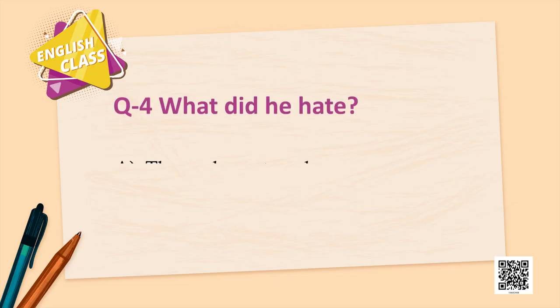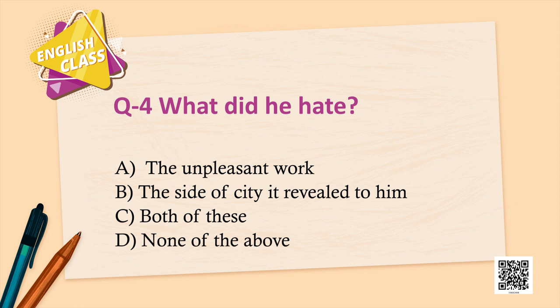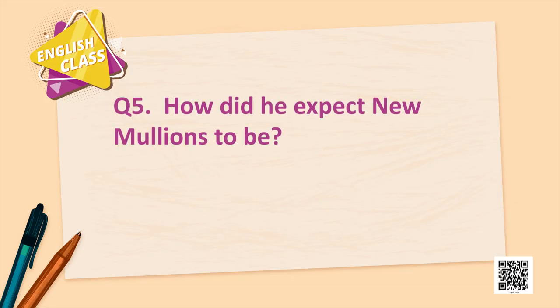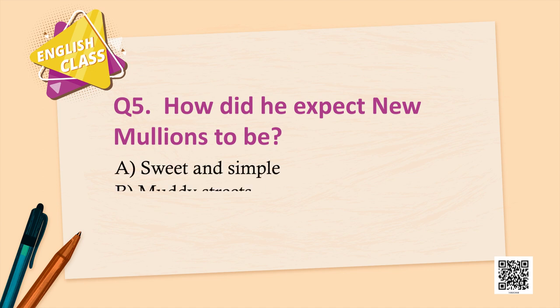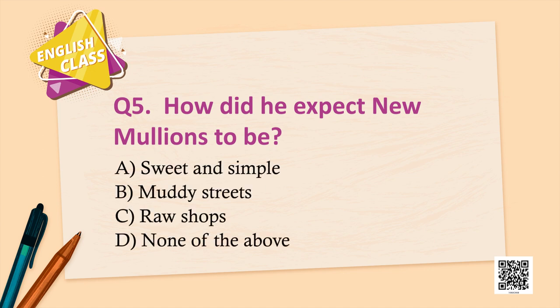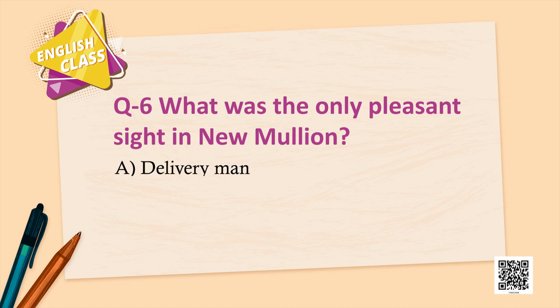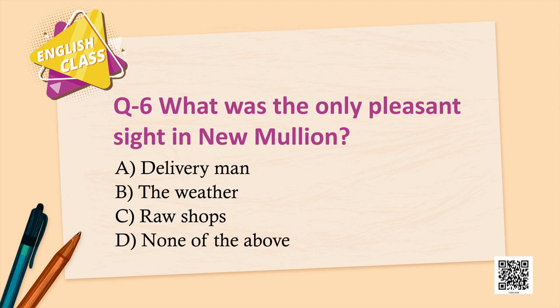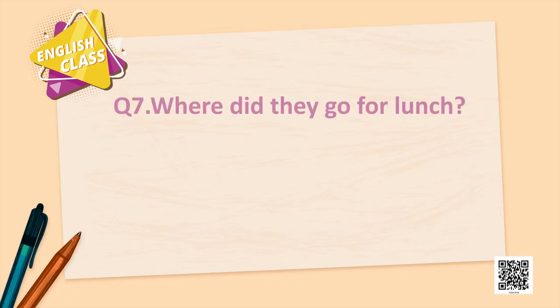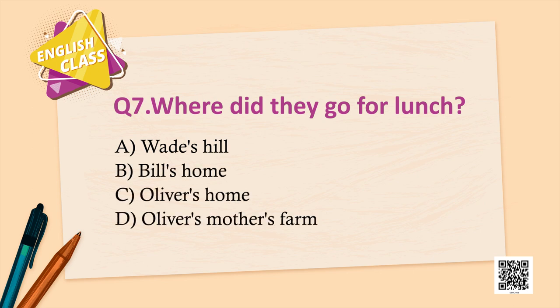Question 4: What did he hate? Answer: Both the unpleasant work and the side of the city it revealed to him. Question 5: How did he expect New Mullion to be? Answer: Sweet and simple. Question 6: What was the only pleasant sight in New Mullion? Answer: The delivery man. Question 7: Where did they go for lunch? Answer: Wade's Hill.